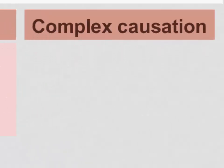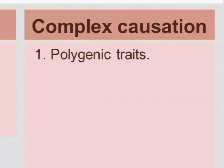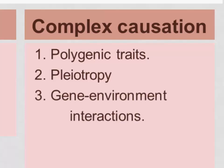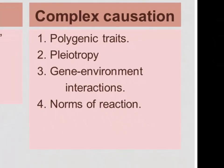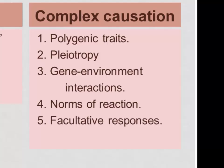The second theme is an awareness of the complexity of genetic causation discovered by behavioral geneticists. In relating this, we'll discuss six things: one, what is a polygenic trait? Two, what is pleiotropy? Three, what do we mean by gene-environment interactions? Four, what is a norm of reaction? Five, what is a facultative response? And six, what is epigenetics? This should give you a sense of the complexity of genetic causation.